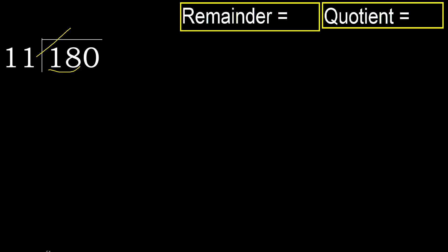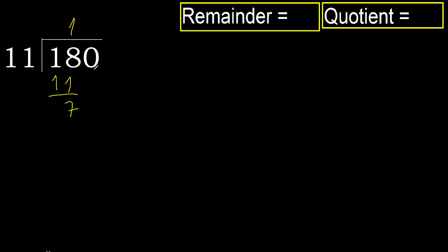11 multiplied by 2 is 22, which is greater. Multiplied by 1 is 11, which is not greater. Ok, subtract, next.